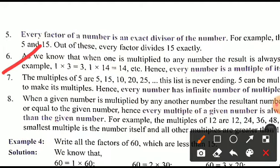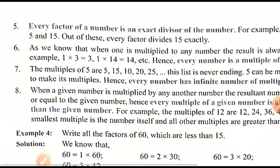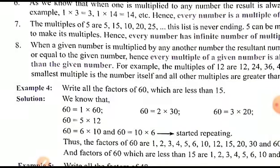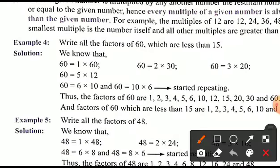When 1 is multiplied by any number the result is always the same number — for example, 1 × 3 = 3 and 1 × 14 = 14. Hence every number is a multiple of itself. These were the important points related to factors and multiples.